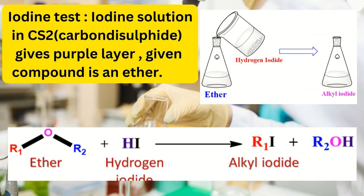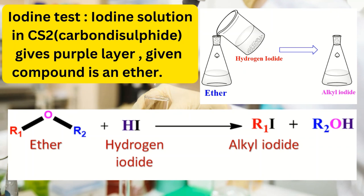Ethers can be identified by the following tests. Number 1: Iodine test. Iodine solution and carbon disulfide gives a purple layer, indicating the given compound is an ether.